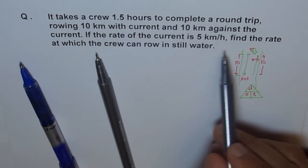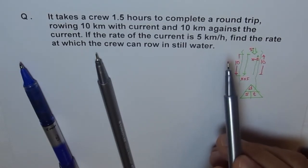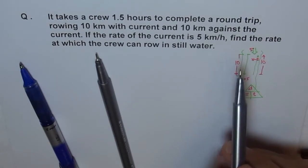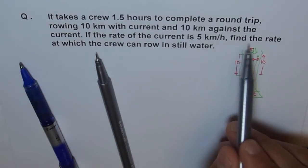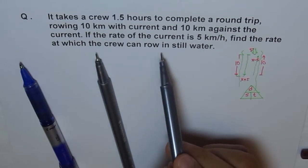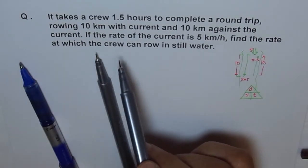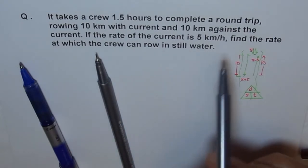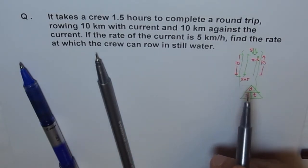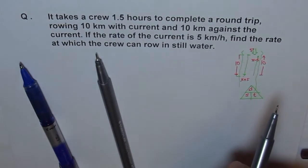So, first step is let people know what variables you are using and what for. So, first is, and that's a kind of a hint. In any word problem, they're asking for something. Put that as a variable. So, find the rate at which the crew can draw in still water. Say, let the rate at which the crew can draw in still water be X. That should be a first statement.